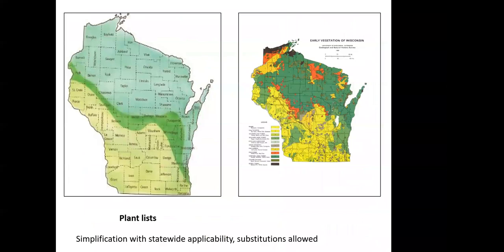These plant lists are a challenge to develop because we're trying to cover the whole state, so there may be a plant you don't recognize or don't typically see in your area. You could always swap that plant out for another similar plant — we have a substitution policy. Say it's an aster, a fall-blooming plant: if you can't find the aster on the list, we ask you to use another fall-blooming plant at roughly the same size. There's more on the substitution policy within the native plant guide itself.